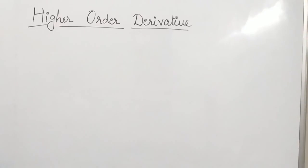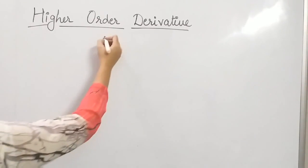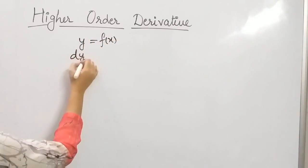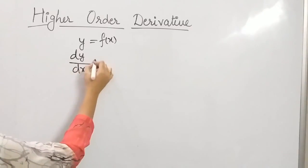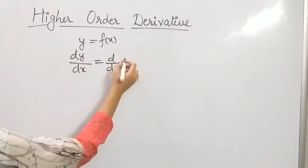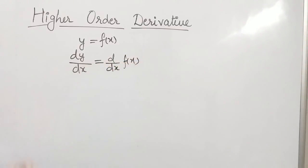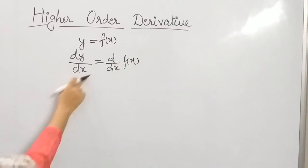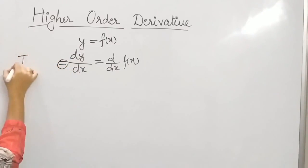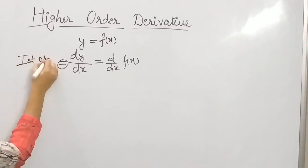Till now we have discussed differentiation of a function y equals to f of x with respect to x, and we get the differentiation of f of x. This dy by dx is called the first order derivative.